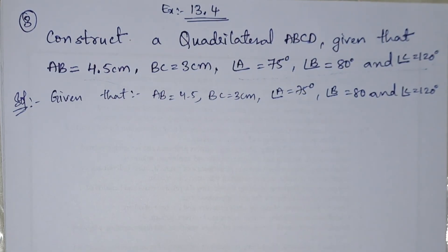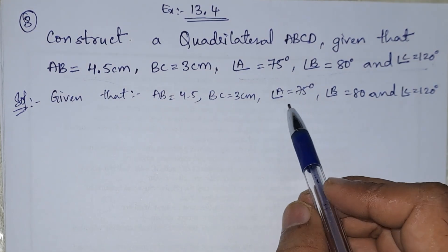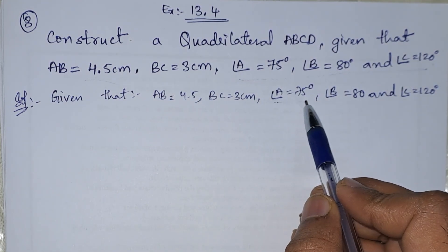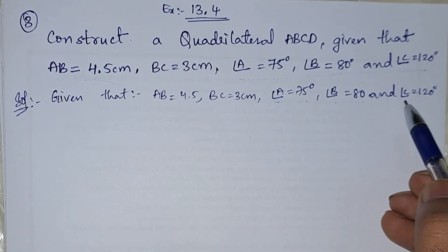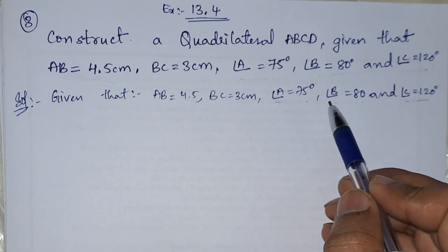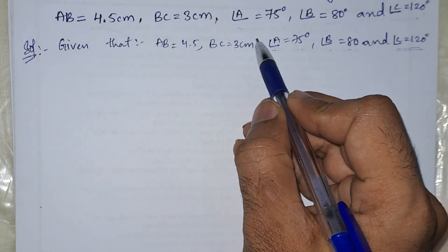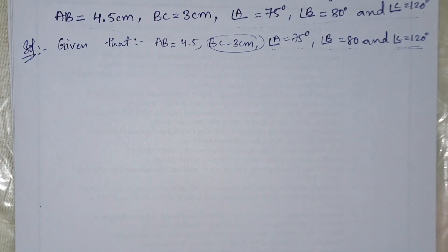First, we observe that angles 75 and 80 are smaller than angle C at 120 degrees. That is why we will first take B and C — we will draw line segment BC equals 3 centimeters.